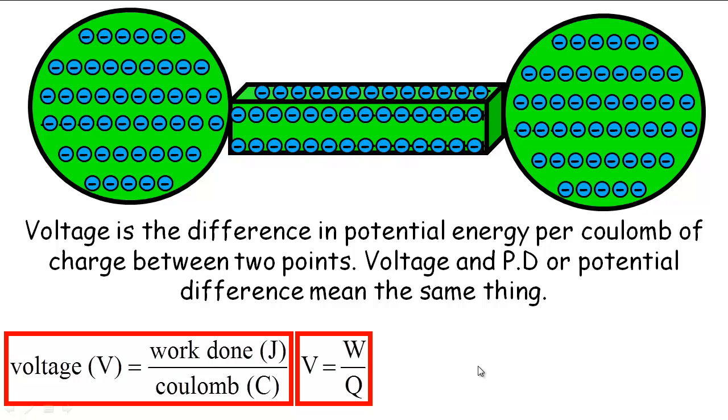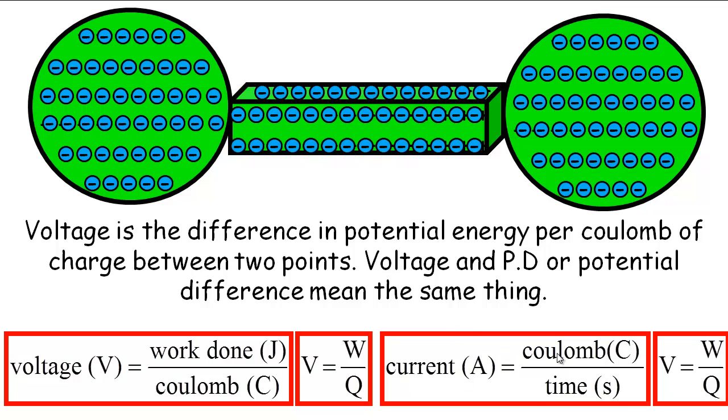Current, we've briefly talked about as well, is just how fast the stuff is moving, the charges that are moving. So current is just measured in the number of coulombs per second, just like you might say water is measured in, the flow of water is measured in litres per second.